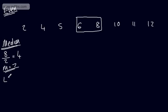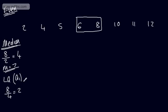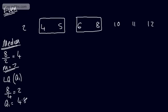Now let's look at the lower quartile, Q1, which is one quarter of the way into the data set. We take one quarter of eight: 8 ÷ 4 = 2, again an integer value. When we get an integer value, we find the second term and then look for halfway between the second and the third term. The second term is 4 and the third is 5, so Q1, the lower quartile, is 4.5.